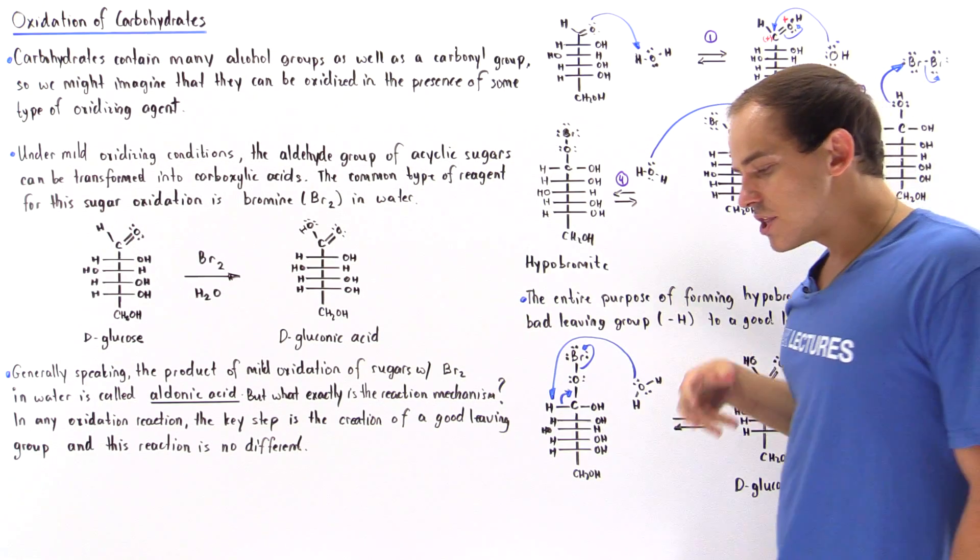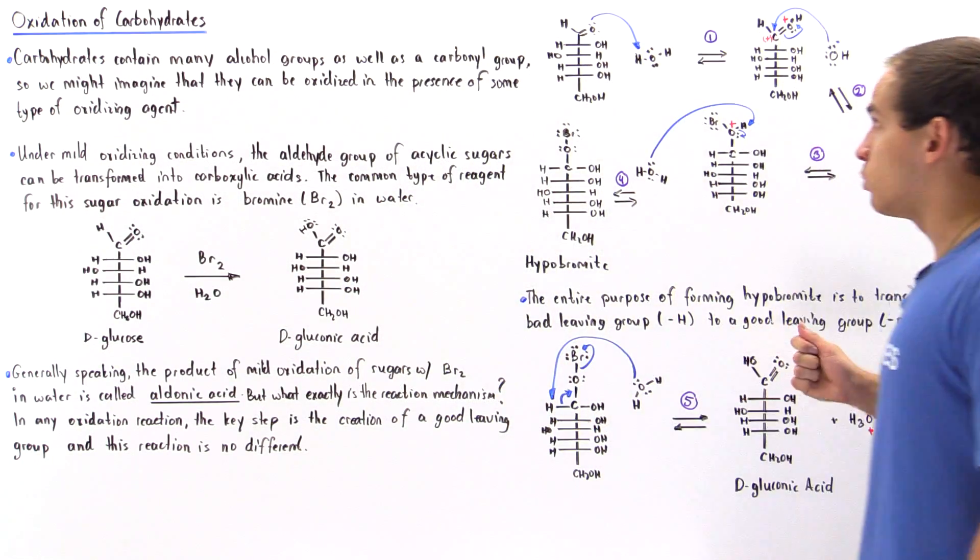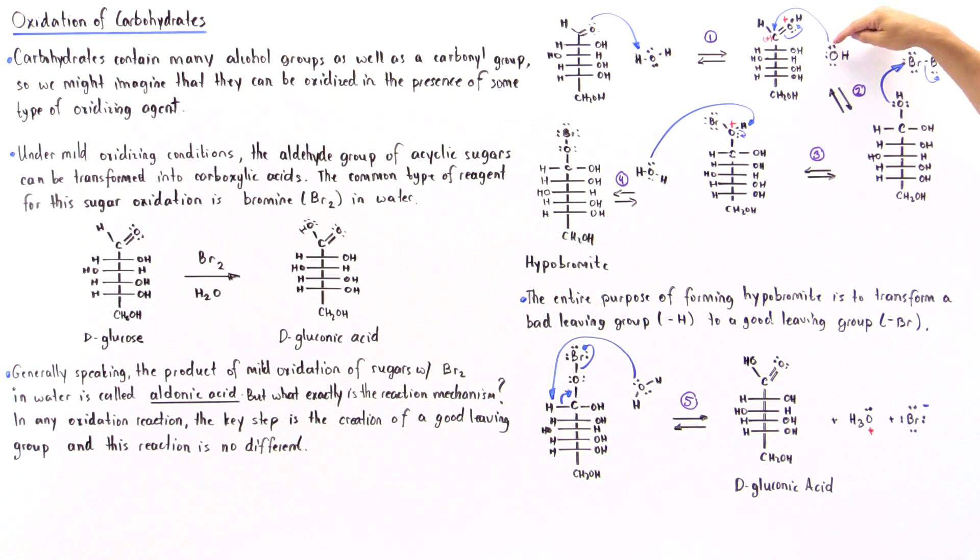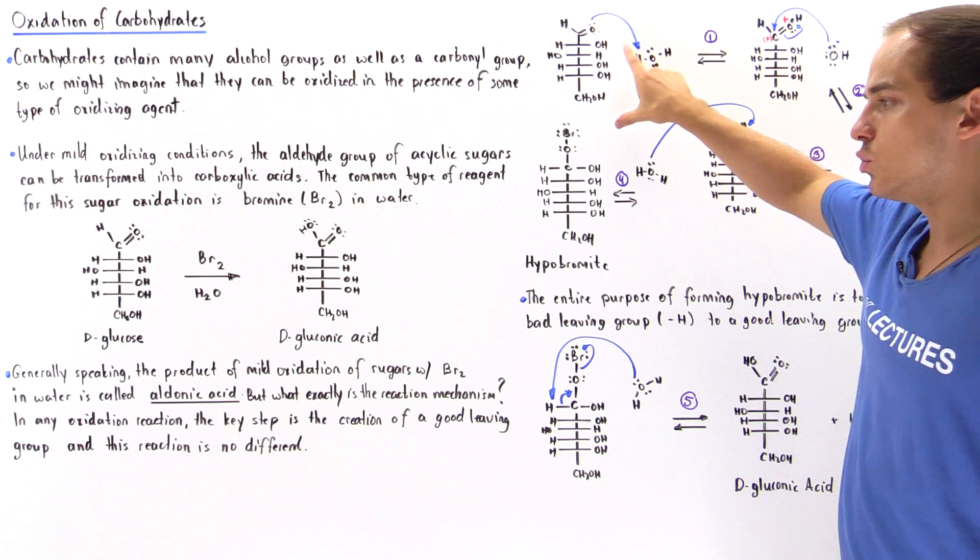We have a positive charge that is delocalized among this oxygen and this carbon. In step number two, the hydroxide molecule that is formed in step number one, when water is deprotonated, acts as a nucleophile, attacks the carbon of the carbonyl, displacing the pi bond, placing it onto this oxygen, forming this intermediate, which is basically known as the hydrate. So this is the hydrate with respect to this molecule, our D-glucose.